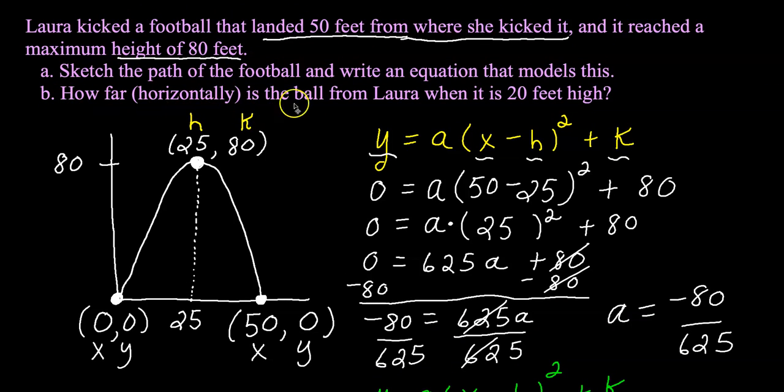Part B says, how far horizontally is the ball from Laura when it's 20 feet high? Well, let's see. It's 20 feet high about right here. About 20 feet high. So the ball comes up and it's about 20 feet high on the way up. And 20 feet high on the way down. So I need to figure out how far it is away from Laura when it's 20 feet high on the way up, and how far away it is from Laura when it's 20 feet high on the way down. So I basically need to figure out these two X values. And we can use algebra to do that. However, I would rather show you this on Desmos.